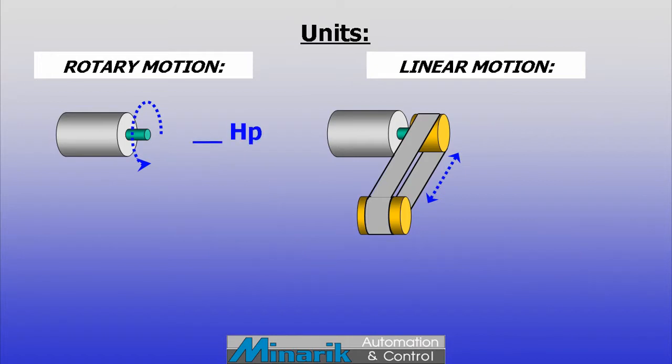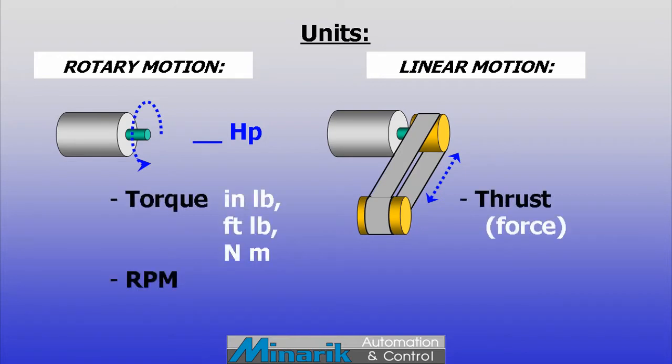Rotary motors are often rated in horsepower and specified using RPM and torque. However, linear movement uses thrust, like pounds force, and movement in feet per second or some equivalent distance per unit time.